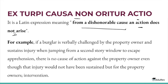For example, if a burglar is verbally challenged by the property owner and sustains injury when jumping from a second storey window to escape apprehension, there is no cause of action against the property owner, even though that injury would not have been sustained but for the property owner's intervention.